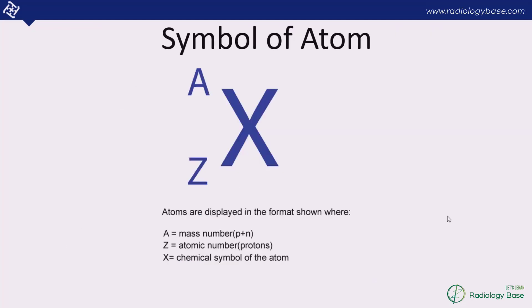Now we come to the symbol of atom. X is the unique chemical symbol which is different for every element, for example for carbon we use C. A is the mass number which is the number of protons plus neutrons, whereas the Z number is the atomic number which is the number of protons.